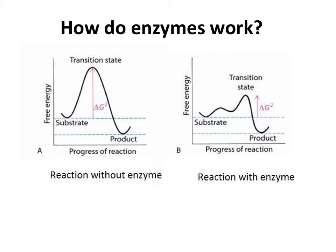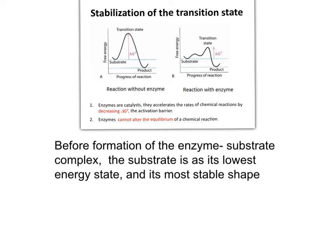We can say that enzymes facilitate the formation of the transition state. An enzyme does not affect the equilibrium point of a reaction and cannot bring about a reaction that is energetically unfavorable. A reaction that has a negative delta-G is spontaneous, while a reaction with a positive delta-G is unfavorable.